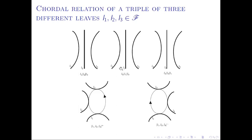A chordal relation of a triple of three different leaves is one of the five different ways in which they can divide the plane. In the first three cases, one leaf separates the other two. And in the last two cases, they define a positive and a negative cycle respectively.